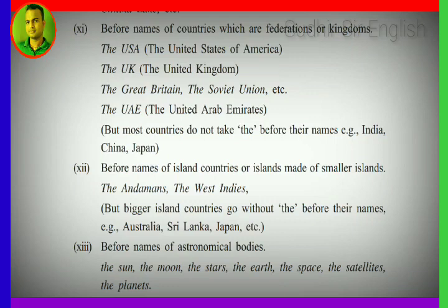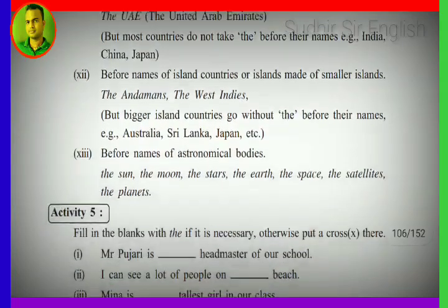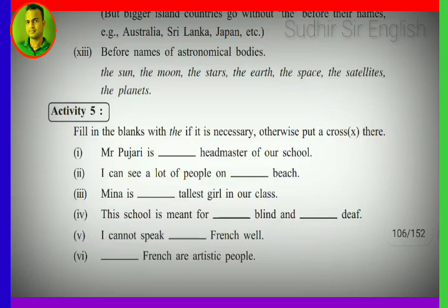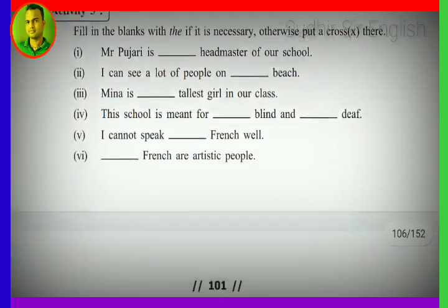Next: before names of astronomical bodies, we use 'the'. Examples: the sun, the moon, the stars, the earth, the space, the satellites, the planets. Now for the activity: fill in the blank with 'the' if necessary, otherwise put a cross. Try to answer — if 'the' is needed, use it; if not, mark a cross.